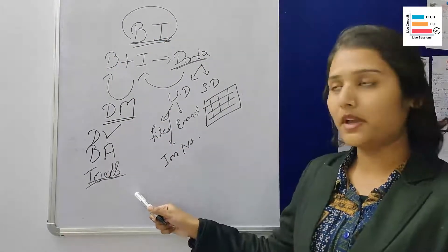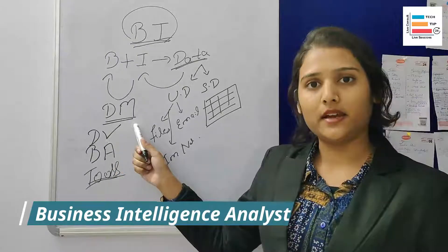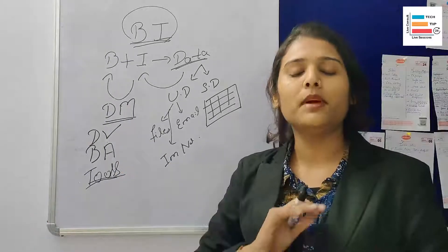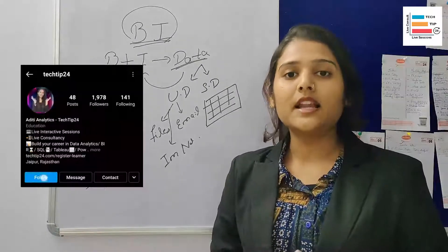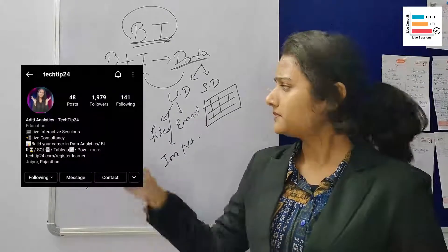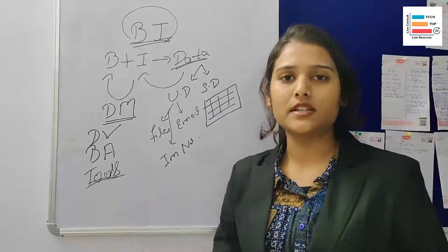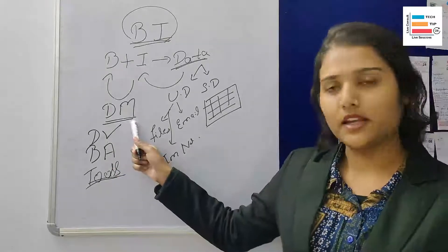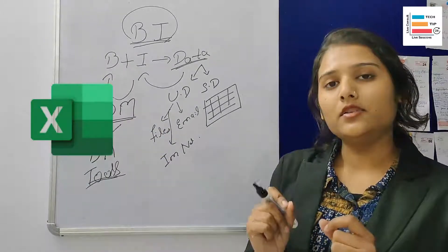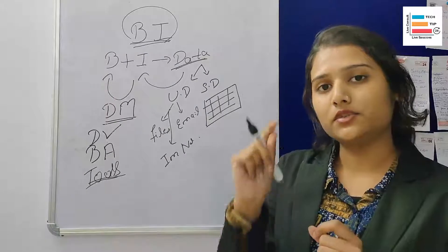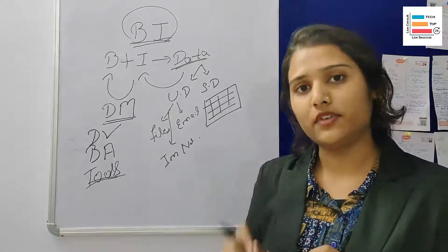You need to start with data mining. Gather any dataset from wherever you want — if you are interested in sports data, climatic data, or social media related data, get a dataset. You can use multiple websites that have free datasets. Import the data and try to convert that data into proper rows and columns. If you have any null values, try to remove them using appropriate functions.